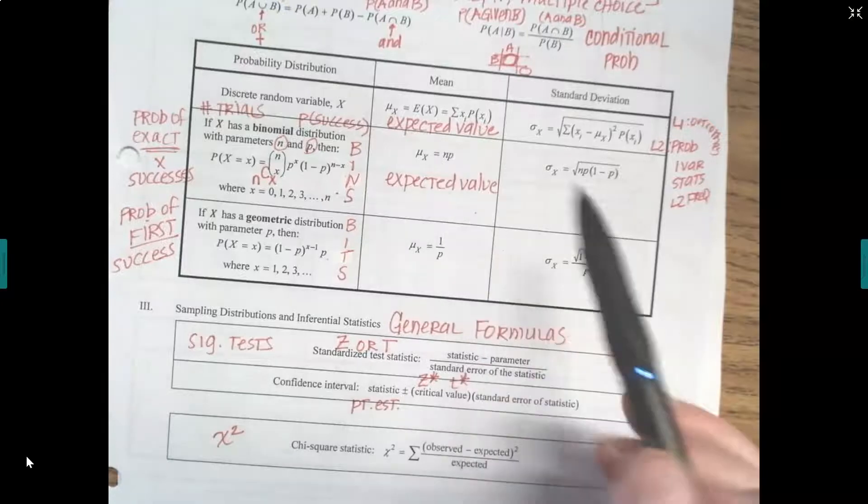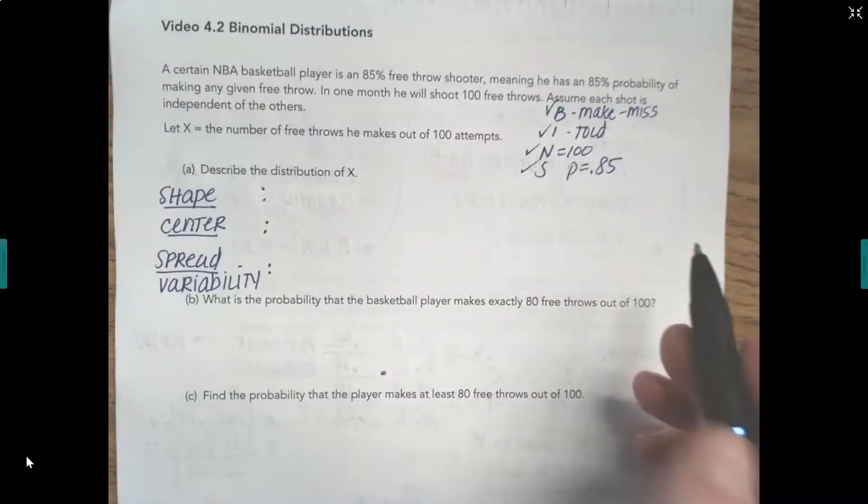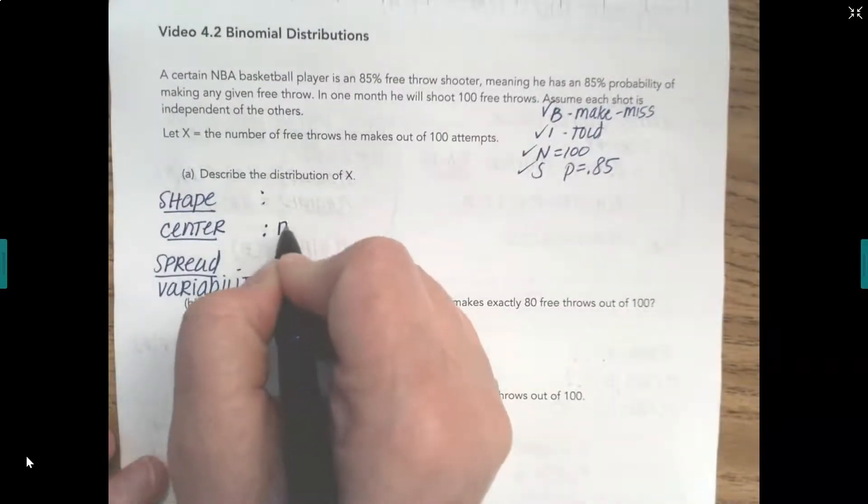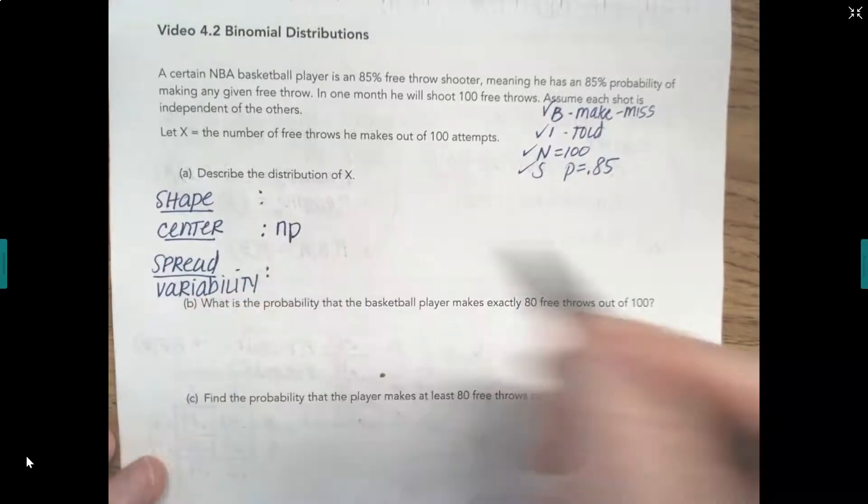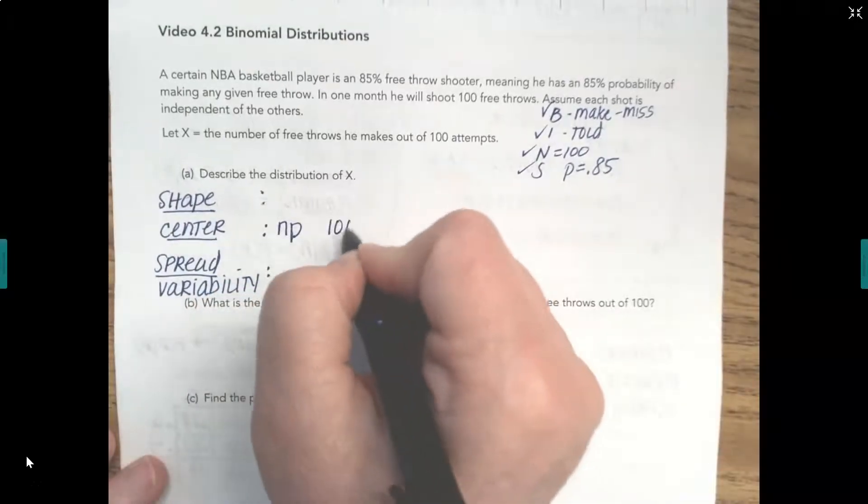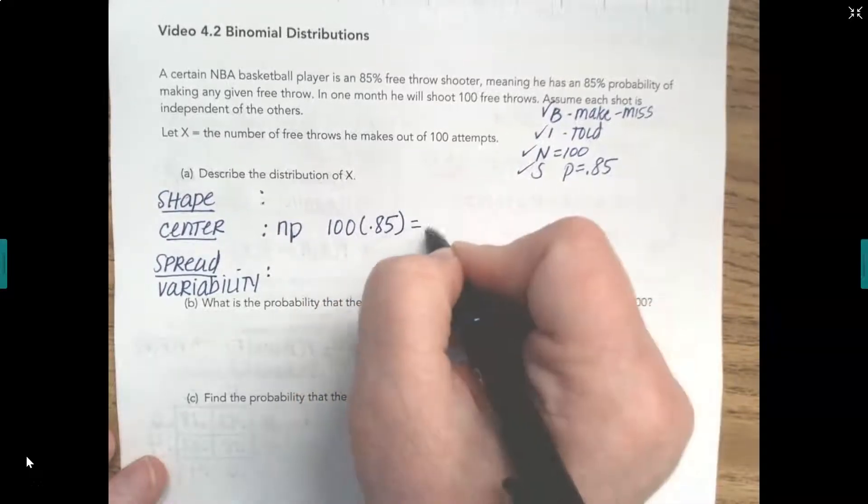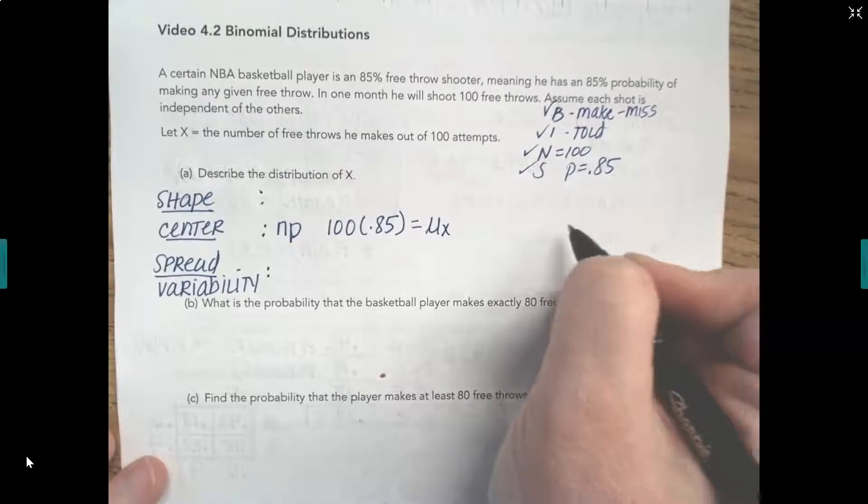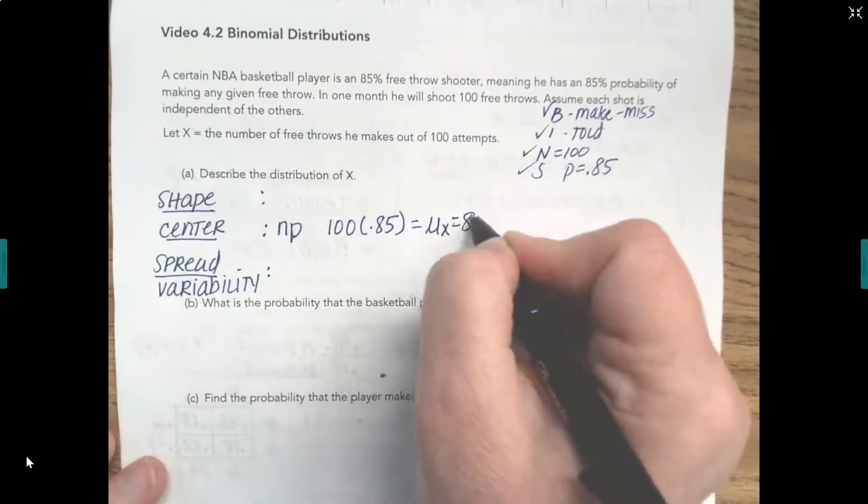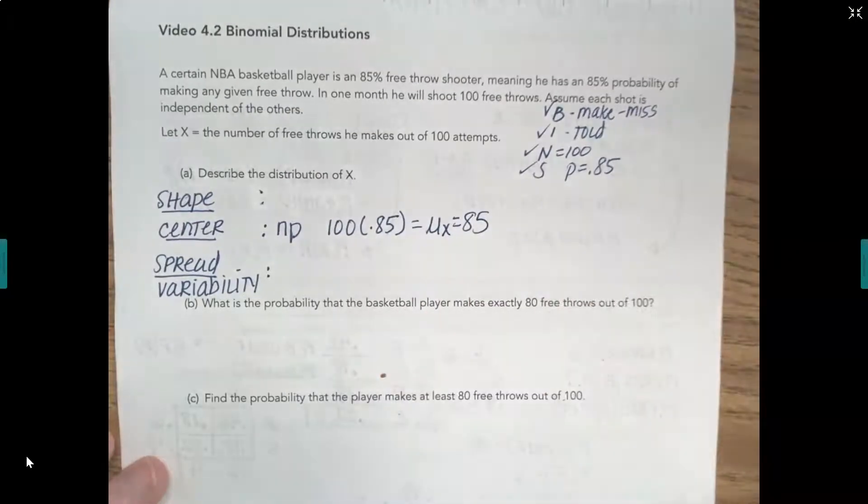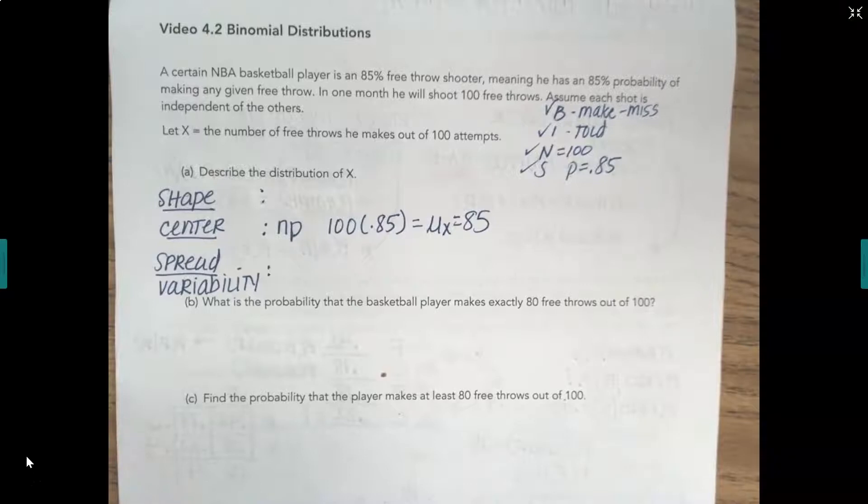This is how many we expect him to make. So our center is N times P, which our N is 100, our P is 0.85. So we would expect the mean of this distribution of X to be 85. So it should center on 85 if he's actually an 85% free throw shooter.